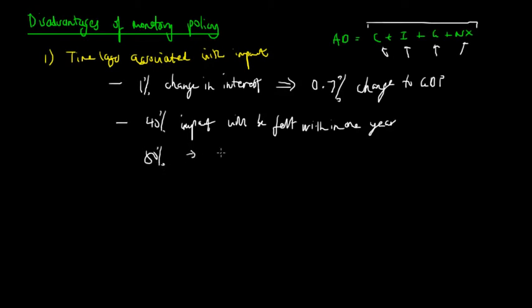80% in two years and 100% in three years. And as we know, the business cycle only goes for around 7 to 10 years. And so if 100% of this contractionary monetary policy were to be felt three years after the actual implementation of the policy, then we can see quite possibly that this would actually become pro-cyclical and therefore destabilize the economy. So that's the first disadvantage to monetary policy, is that there may be time lags associated with the impact of monetary policy into the economy. It's not 100% impact within the first year of implementation, it's 100% impact within the first three years of implementation.